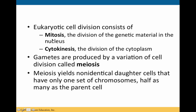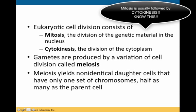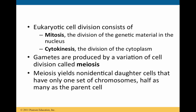Eukaryotic cell division consists of mitosis and cytokinesis. Mitosis is the division of the genetic material in the nucleus; cytokinesis is the division of the cytoplasm — you need both. Gametes are produced by a variation of cell division called meiosis. So we have mitosis, meiosis, and cytokinesis — know the difference. Meiosis is going to give non-identical daughter cells, and these daughter cells are going to have only one set of chromosomes, half as many as the parent.